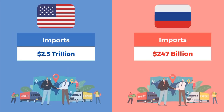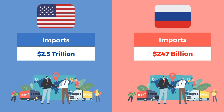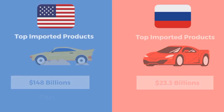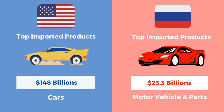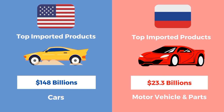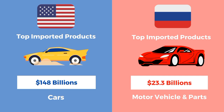Imports of the US are 2.5 trillion dollars and imports of Russia are 247 billion dollars. The top imported products of the US are cars, with a value of 148 billion dollars. The top imported products of Russia are motor vehicles and parts, with a value of 23.3 billion dollars.